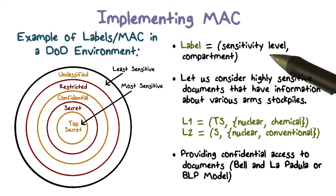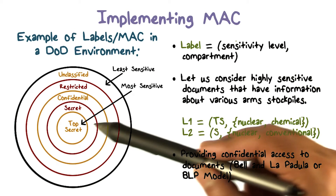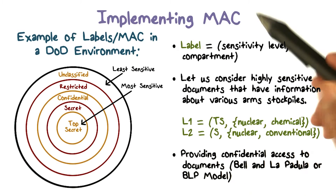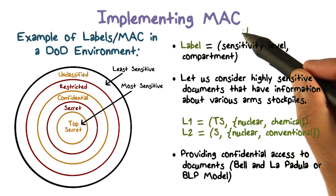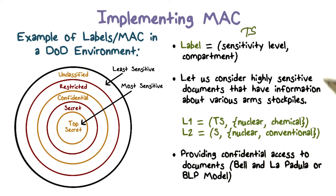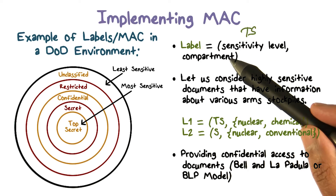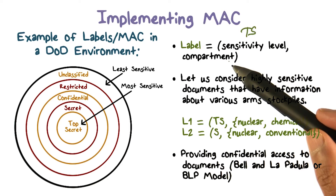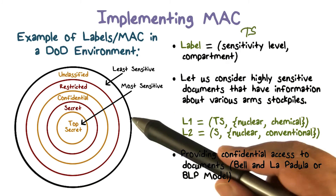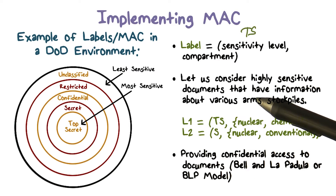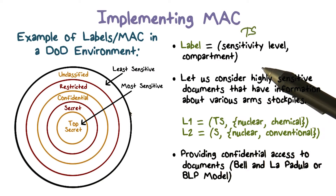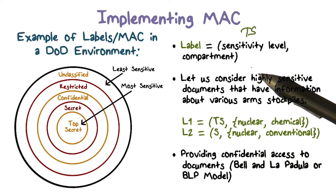A label is going to be a sensitivity level — for example, it could be top secret — and a compartment that describes what kind of data is contained in the document.